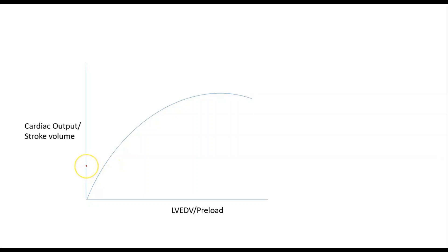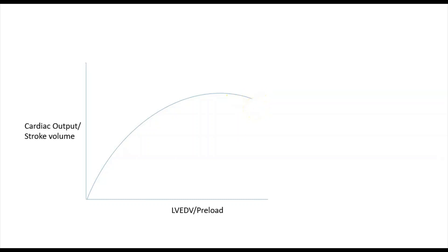Now, as the volume within the ventricle increases, you get more stretch on the heart muscle and the sarcomere length increases. This therefore leads to increased contractility and increased cardiac output, to a point where there is optimum volume within the ventricle, optimum stretch on the heart muscle, and therefore optimum cardiac output. On the other hand, when there's too much volume within the ventricle, there can be too much stretch on the heart muscle and the sarcomere length will become too long.